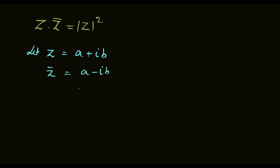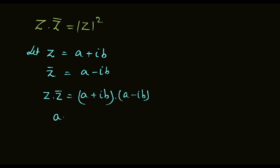इन दोनों को multiply करते हैं: z into z conjugate = (a plus iota b) into (a minus iota b). अब यहाँ property लग रहे है: a plus b into a minus b equal to a square minus b square.